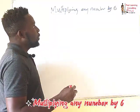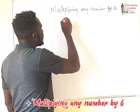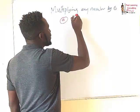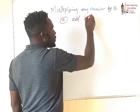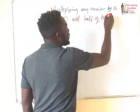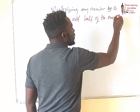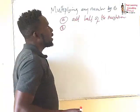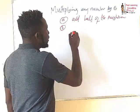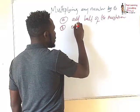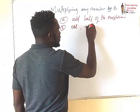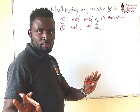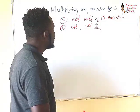For multiplying any number by 6, there are two rules. Rule one is: add half of the neighbor. Rule two is: if the number is odd, then add 5. Those are the only rules we need to use.